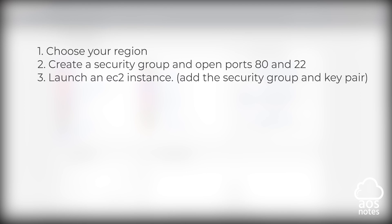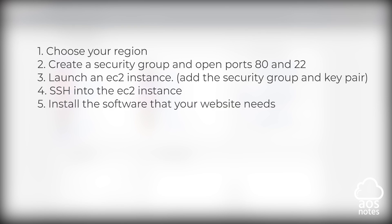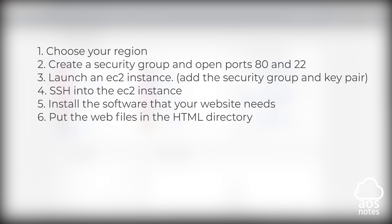First, we are going to choose the region where we will launch our EC2 instance. Then we will create a security group and open port 80 and port 22. Next, we will launch an EC2 instance and make sure we add the security group and the key pair. Then we are going to SSH into the EC2 instance and install the necessary software that our website needs to run. Once we've done that, we will put our web files in the HTML directory on our EC2 instance. The last thing we are going to do is start the Apache service.